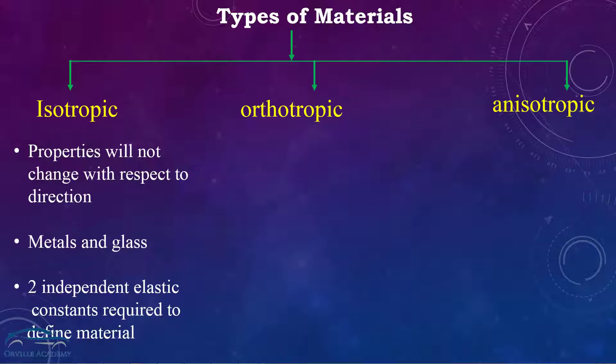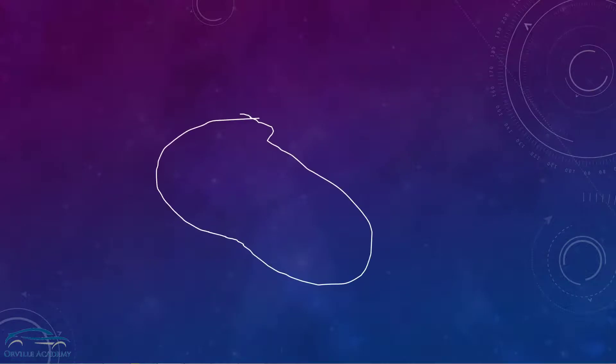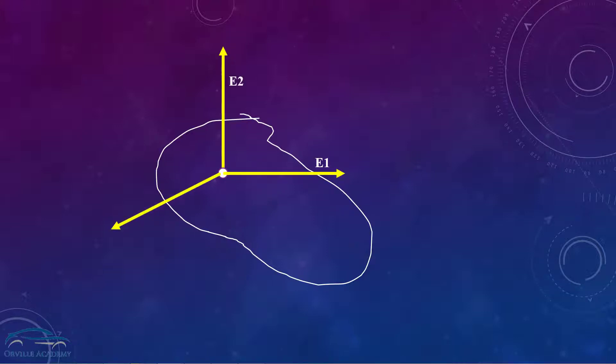Next we will look into the orthotropic material. One important point to remember: orthotropic materials are a subset of anisotropic materials. In case of orthotropic material, properties will change with respect to mutually perpendicular directions. At any point inside the material, properties are going to change with respect to mutually perpendicular direction, as you can see — Young's modulus is changing with respect to direction.